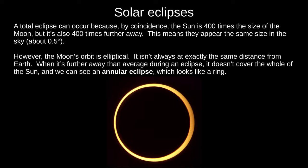Total eclipses occur because, by coincidence, the Sun is 400 times the size of the Moon, but also 400 times further away. This means they appear the same size in the sky, about half a degree across.